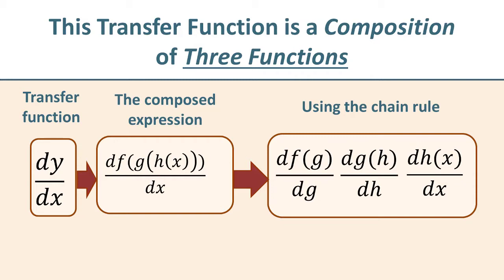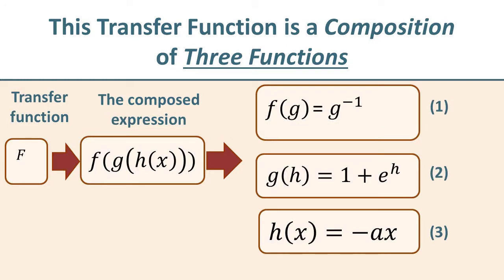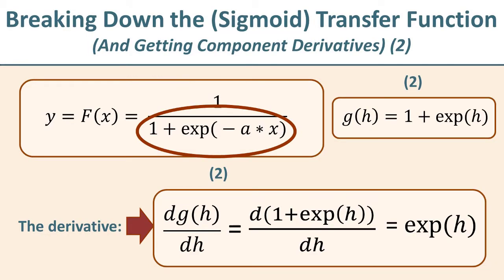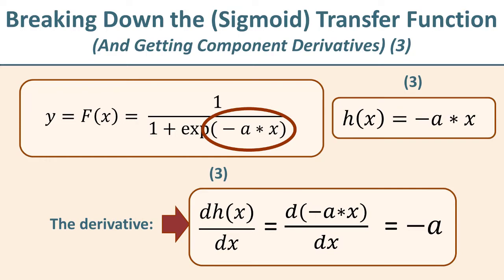So f of g is g to the minus 1, or 1 over g. g, or g of h, is 1 plus e to the h. And then h of x is minus a, or alpha, times x. Now to obtain the first derivative, that is the derivative of f of g, or g to the minus 1, we very simply apply the power rule in differential calculus. So we take the power down in front, that's the minus 1, and then we drop the power of that function, that g, from minus 1 to minus 2. So we get minus g, which is now to the minus 2. For the derivative of g of h, which is 1 plus e to the h, we simply get e to the h. And then for the derivative of h of x, which is simply the derivative of minus a times x, we get minus a.